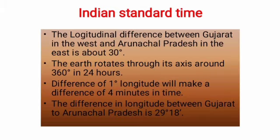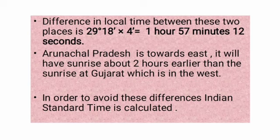Indian Standard Time. The longitudinal difference between Gujarat in the west and Arunachal Pradesh in the east is about 30 degrees. The earth rotates through its axis around 360 degrees in 24 hours. Thus, a difference of 1 degree longitude makes a difference of 4 minutes in time. The difference in local time between Gujarat and Arunachal Pradesh is 29 degrees 18 minutes, multiplied by 4 minutes, giving 1 hour 57 minutes 12 seconds.